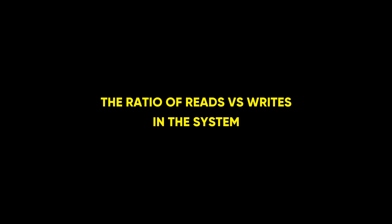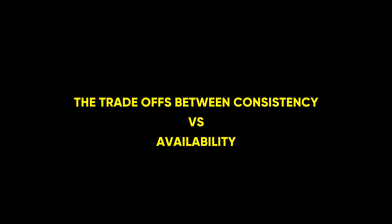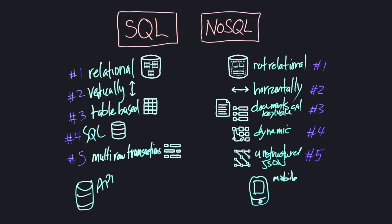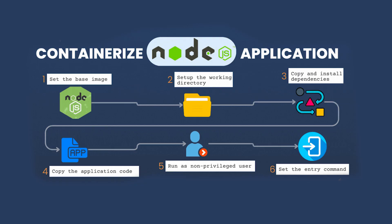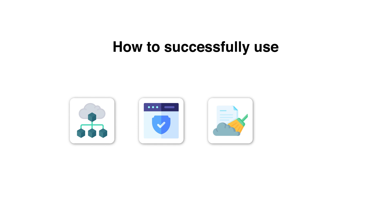With system design, you have to remember that the solution can be very vague — it really depends on a number of factors. For example: how many users will be actively using the product, the ratio of reads versus writes in the system, the trade-offs between consistency versus availability, the CAP theorem. You really want to understand when to use SQL or NoSQL databases, how authentication works, how to scale clusters horizontally versus vertically, how to containerize your applications, and how to successfully use microservices, firewalls, caches, proxies, and more. The biggest mistake people make is regurgitating the design of something they watched online 20 minutes before the interview.